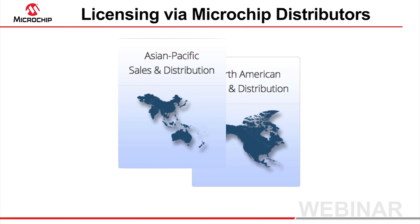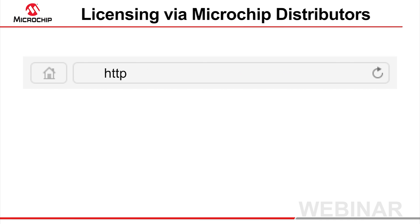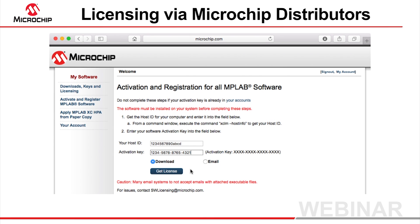If you have purchased a compiler license through a Microchip distributor, your activation key is not automatically registered, and you will need to perform this step before you install the license file. Your activation key might have been emailed to you, or it might be enclosed within the DVD box if you purchased physical media. Open the My Software webpage in your browser, or from inside the IDE Start page as shown in the previous slide. You will see a link to the Activate and Register page where you can enter your host ID and the activation key you received with your purchase. This process registers the compiler with your account and activates the key. You can then download and install the license file as described earlier.